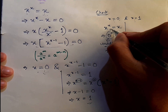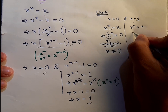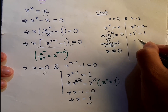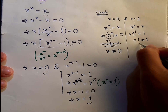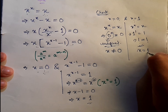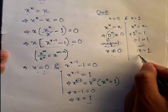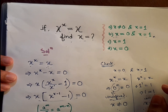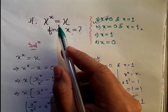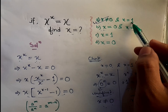Similarly, if we put x equals 1 into the expression, we get 1 to the power 1 equals 1, so the left-hand side equals the right-hand side. Therefore x equals 1 is valid. The final answer is x not equal to 0, and x equal to 1.